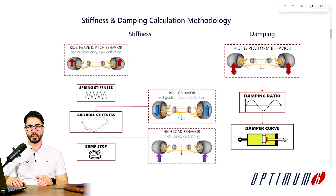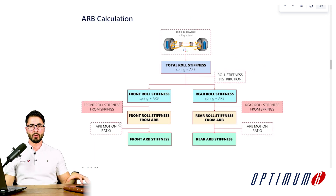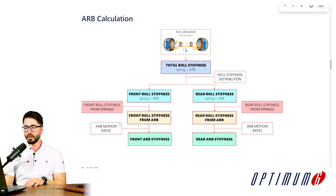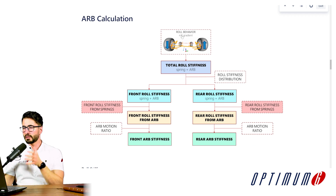Going back to our initial schematic, the next step is to define what roll behavior we would like to see in our suspension, and from there calculate the anti-roll bar stiffness needed to achieve that. If we first define the roll behavior expected — let's say we define a roll gradient — we know how much the car rolls for each G of lateral acceleration. For example, we want the car to roll 0.5 degrees per G of lateral acceleration.